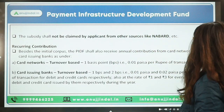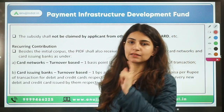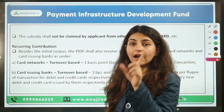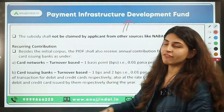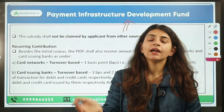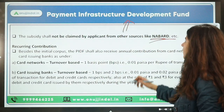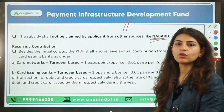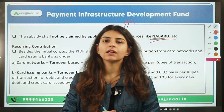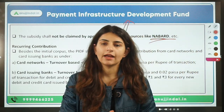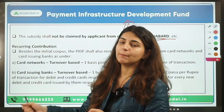An important restriction: if any applicant is already availing subsidies under this fund, they cannot avail subsidy from any other source, such as NABARD or any other scheme that provides subsidy for payment infrastructure development.